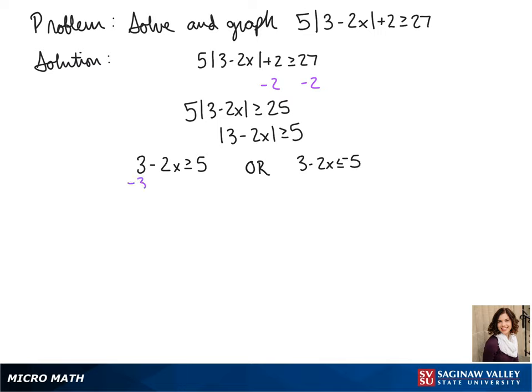Our first step will be to subtract 3 from each side. And we get negative 2x is greater than or equal to 2. Since we have to divide by a negative, we have to flip the sign. We get x is less than or equal to negative 1.